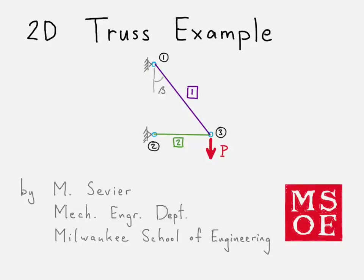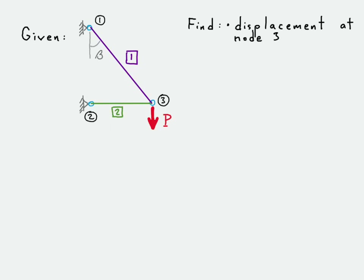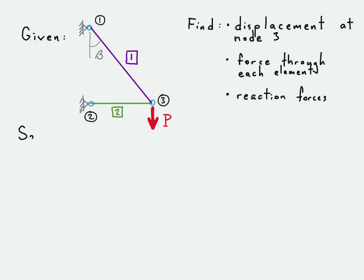Here we're going to take a look at a two-dimensional finite elements analysis truss example problem. What we have is a truss composed of two truss bars — two elements — with a load at node three and constraints at nodes one and two. We want to figure out the displacement at node three, and then use that to find the force through each element and the reaction forces at nodes one and two.